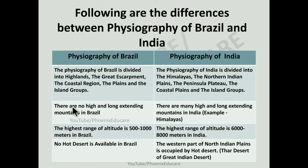There are no high and long extending mountains in Brazil. But in India, there are many high and long extending mountains — for example, the Himalayas, and also the Western Ghats and Eastern Ghats. These are high mountains that extend over long distances. Such kinds of mountains are not seen in Brazil.